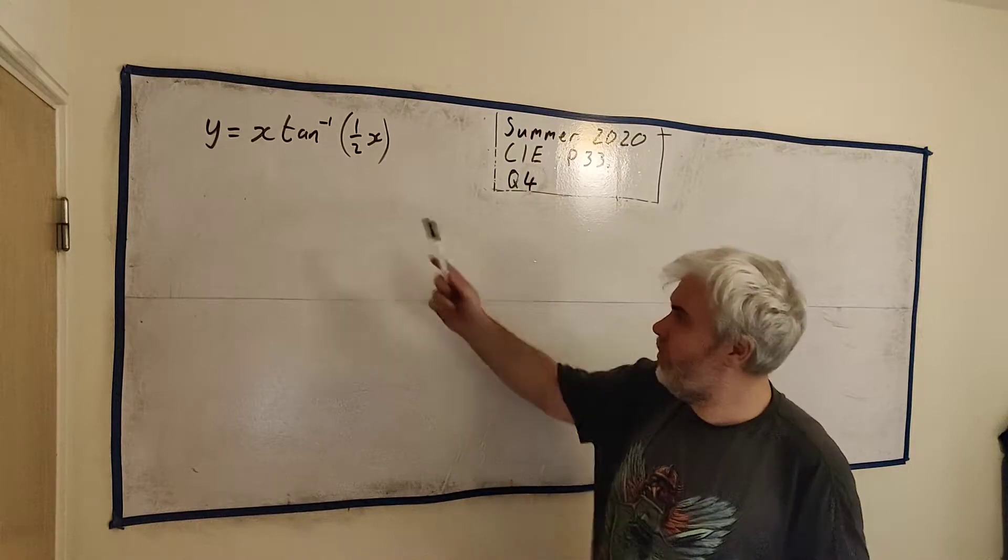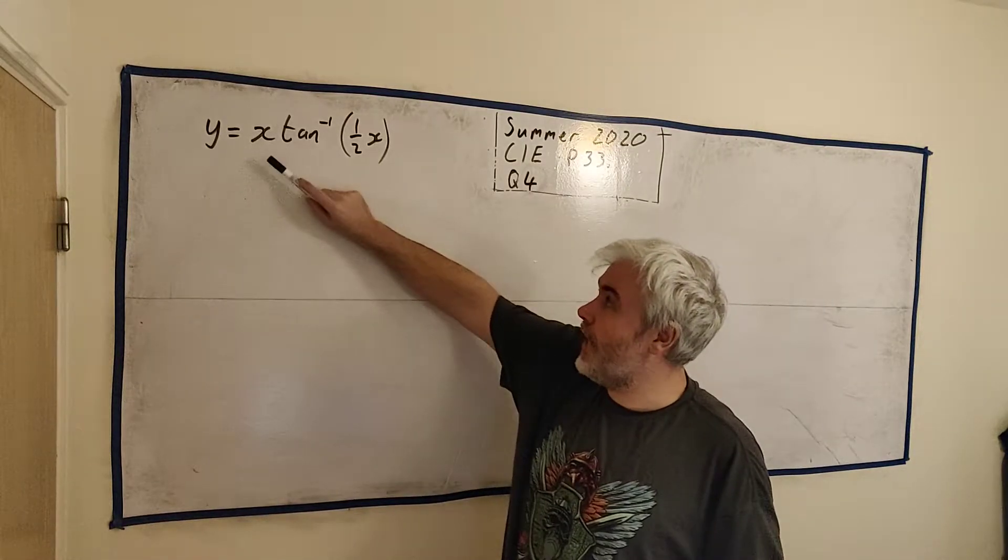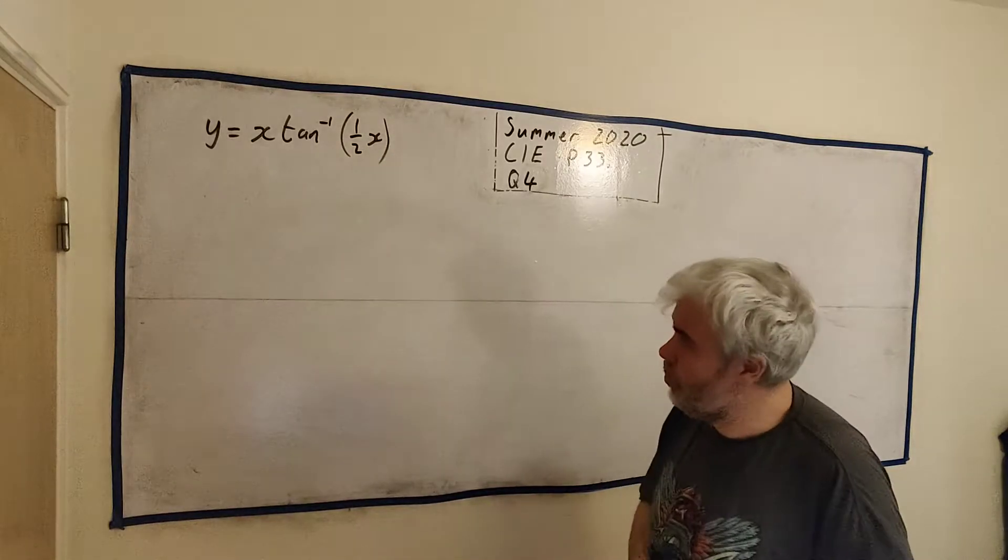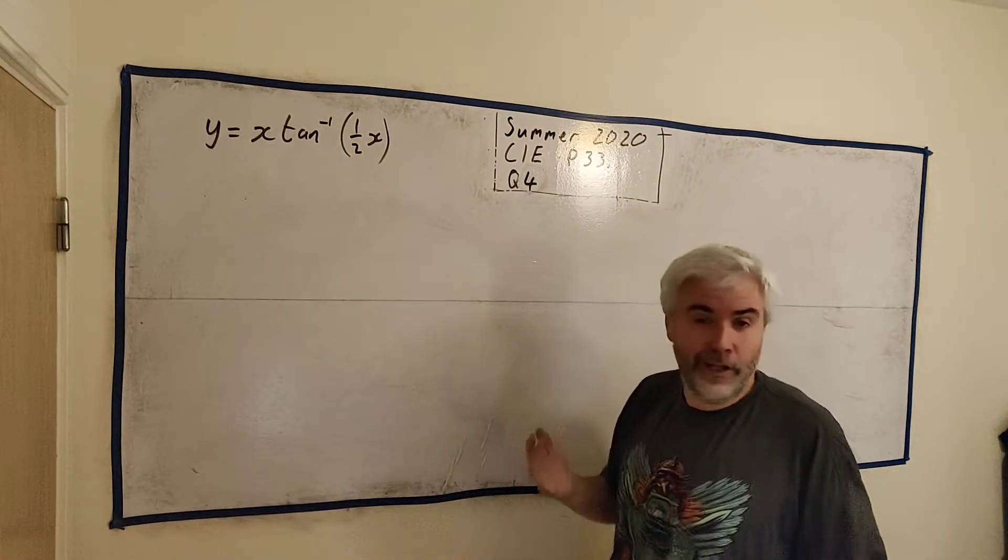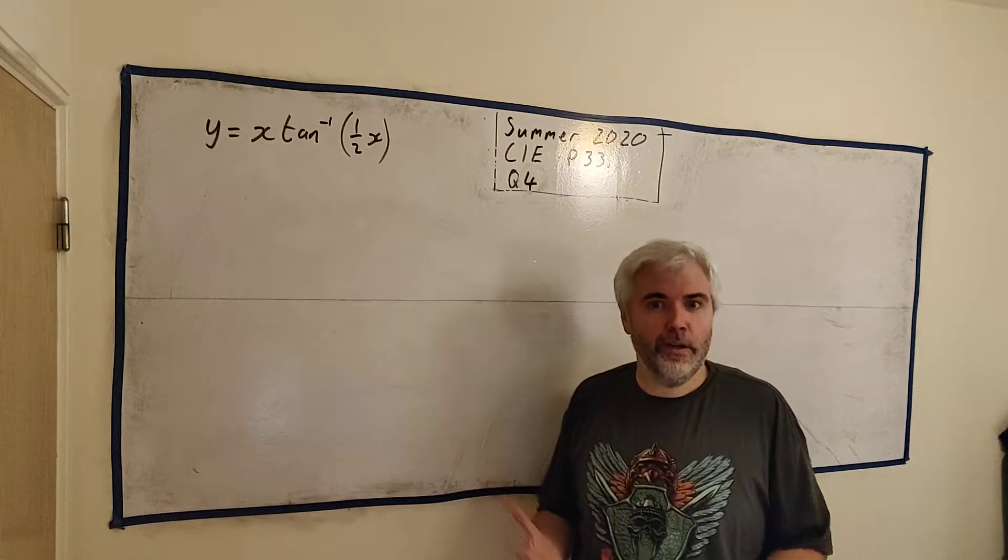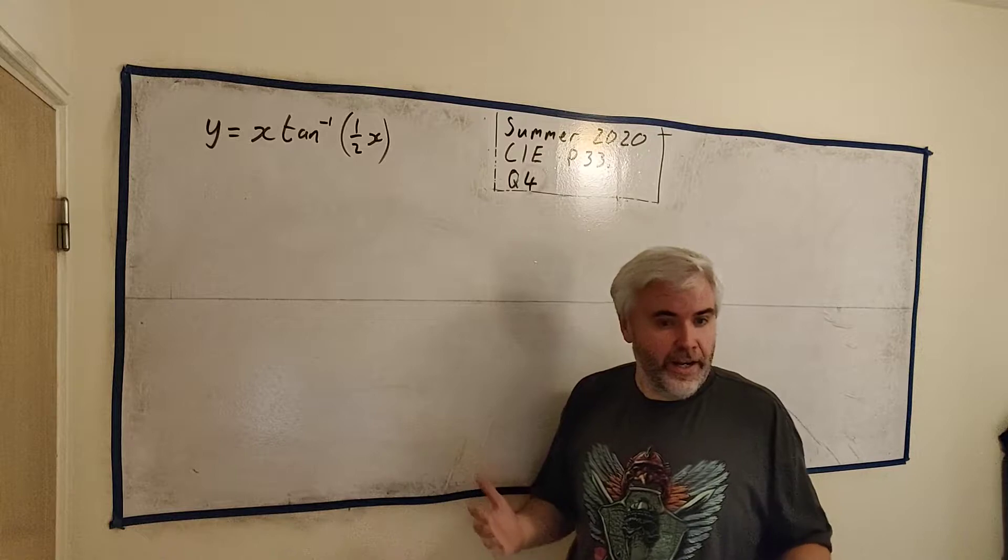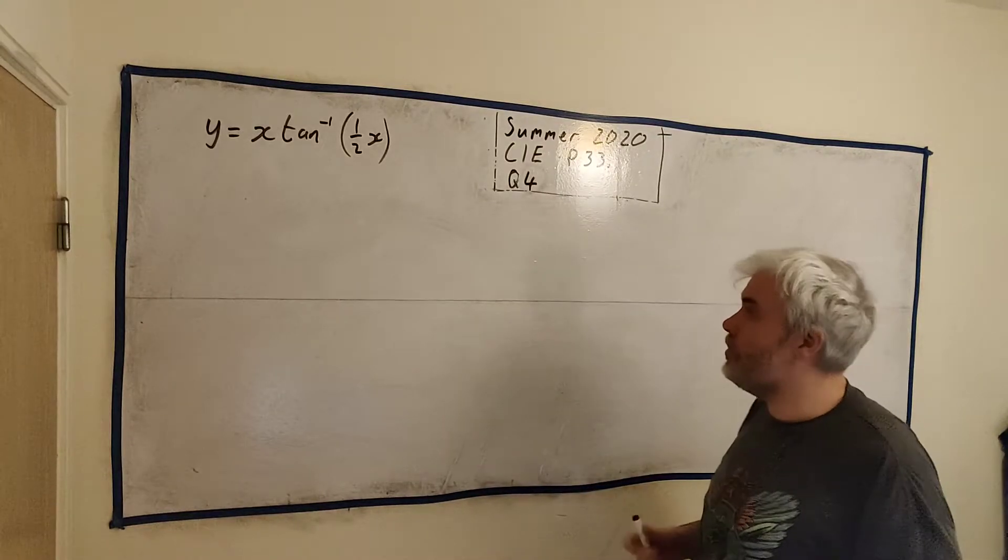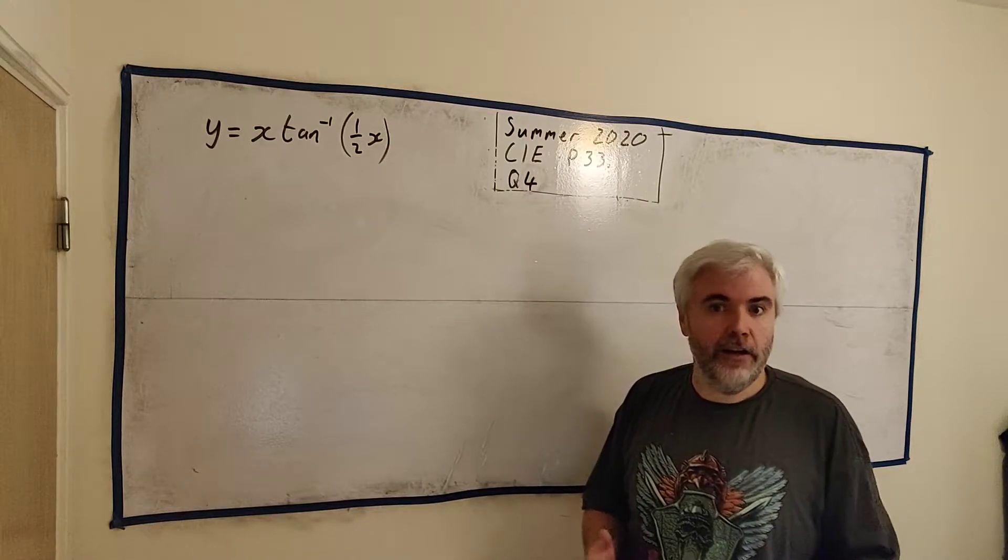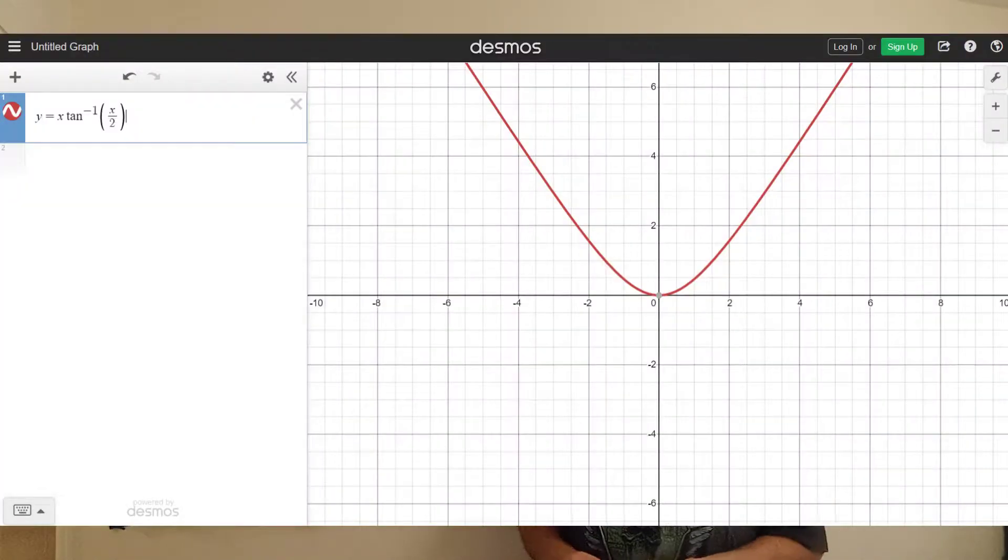In this question, they give us a curve with this equation: y equals x times the inverse tangent of x over 2. Now in an exam, you're not going to be able to know what that looks like. But we're not in an exam right now, so go ahead and use an online graphing calculator. I'll pop one up on the screen right now, and you can see what this looks like, sort of a U shape.